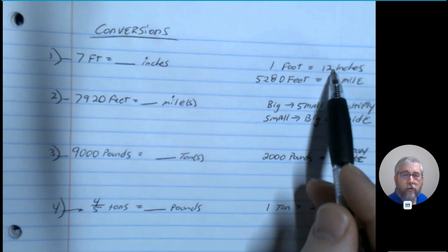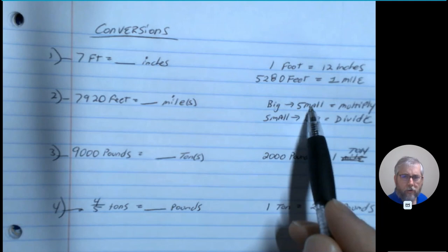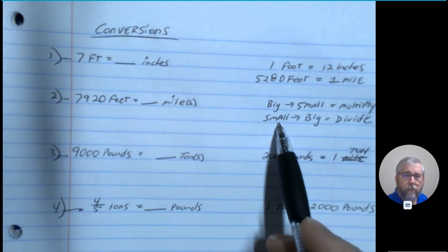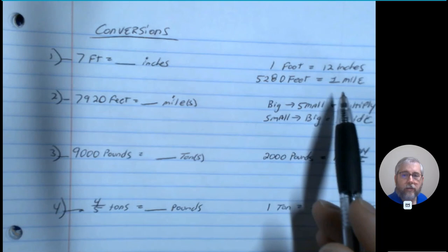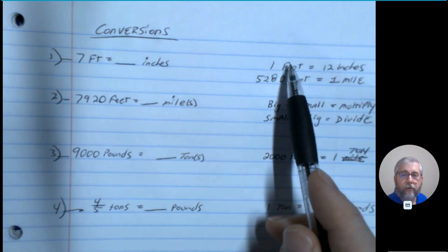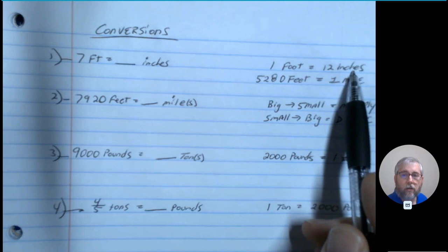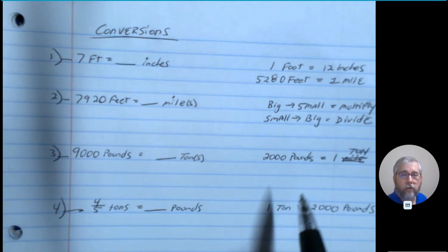The rule of thumb is: if you have a larger unit of measurement going to a smaller unit of measurement, you're going to multiply. If you have a smaller unit of measurement going to a larger unit of measurement, you're going to divide. So for example, 1 foot is a larger unit and 12 inches is a smaller unit — going from foot to inches means I would multiply. Going from inches to foot, I would divide.